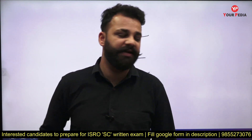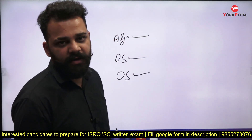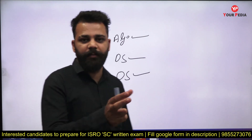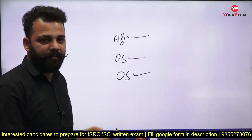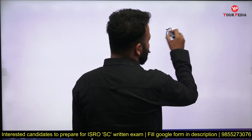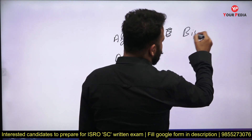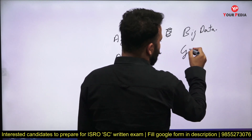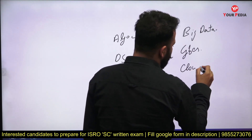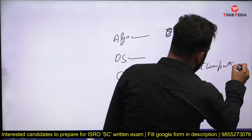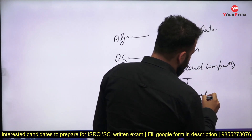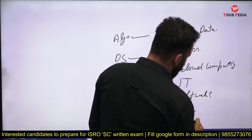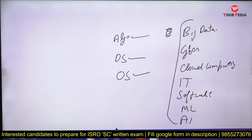In the notification, ISRO mentioned allied topics. These are branches other than core computer science that are also allowed — if you have a B.Tech degree in specializations like Big Data, Cyber Security, Cloud Computing, Information Technology, Software Systems, or Machine Learning and AI, you are eligible.